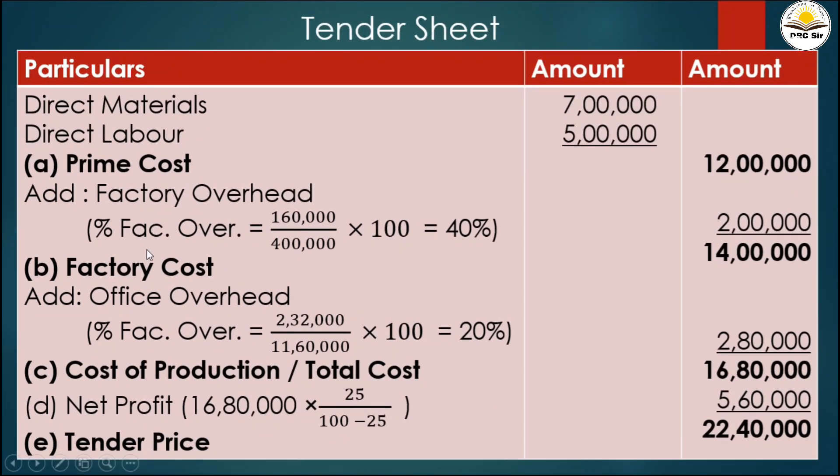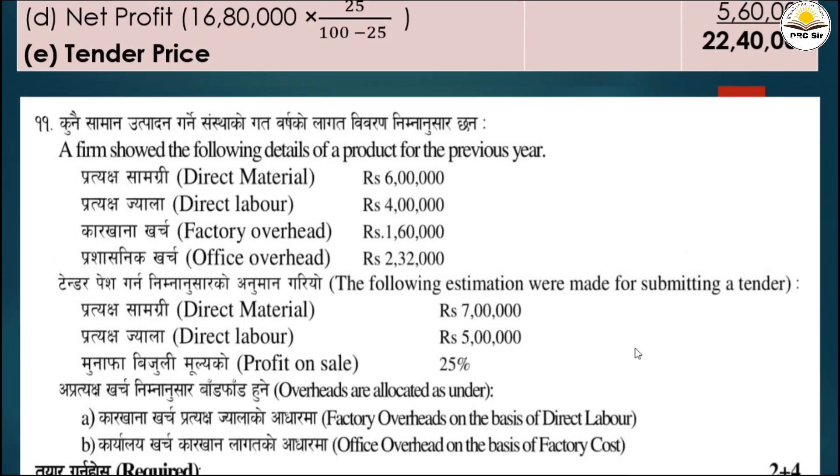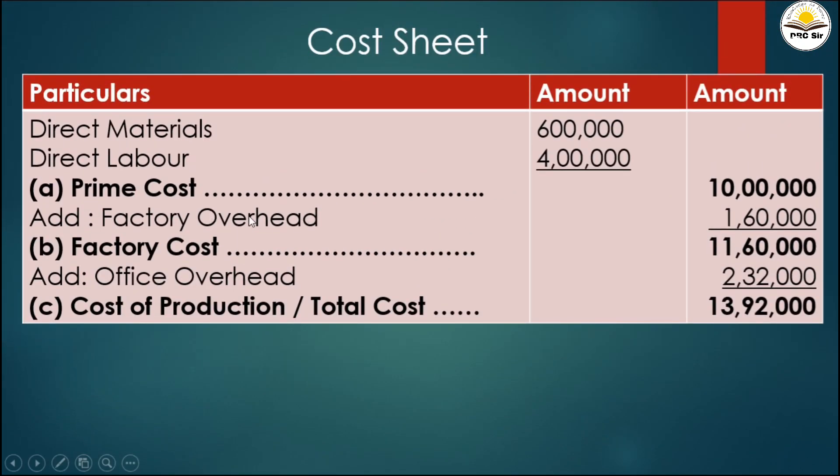The percentage of factory overhead equals factory overhead divided by direct labor times 100. From the cost sheet, factory overhead is 1 lakh 60 thousand and direct labor is 4 lakhs.